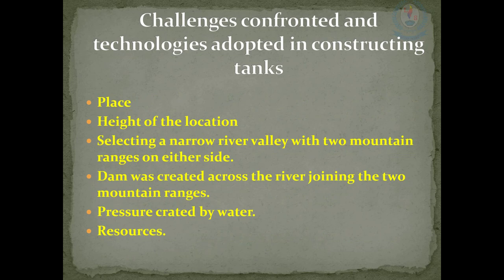Now we are going to learn about the technology used by our ancient people to build tanks. When building a tank, they paid attention to several factors. Especially they paid attention to the place, and they considered the height of the location. Mostly they selected a narrow river valley with two mountain ranges on either side. A dam was created across the river, joining the two mountain ranges. They also considered the pressure created by water, as well as human resources and the number of resources needed to build the tank.